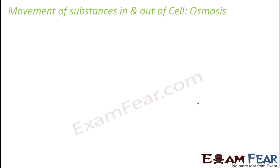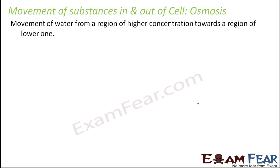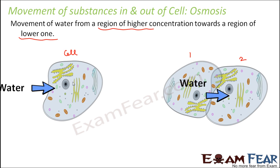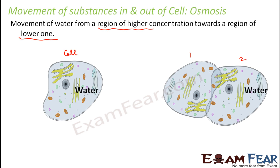Osmosis works on the same concept as diffusion, except instead of gases, here we have water. Movement of water takes place from a region of higher concentration to a region of lower concentration. If water concentration is more outside, water moves from outside into the cell and the cell swells up. If concentration is more inside, water moves out and the cell shrinks.